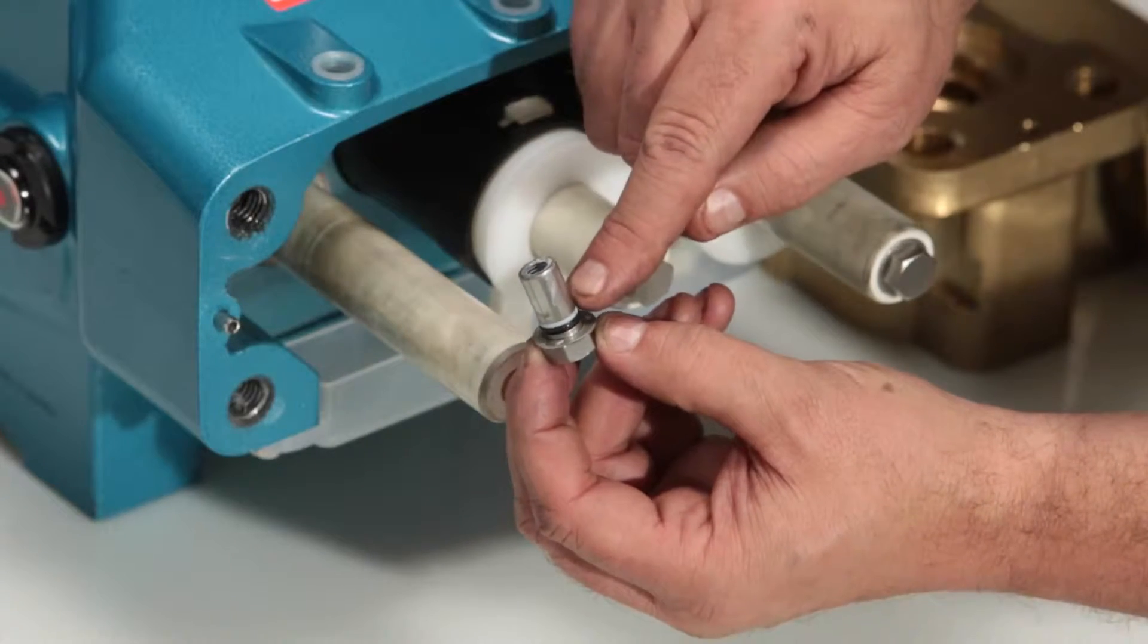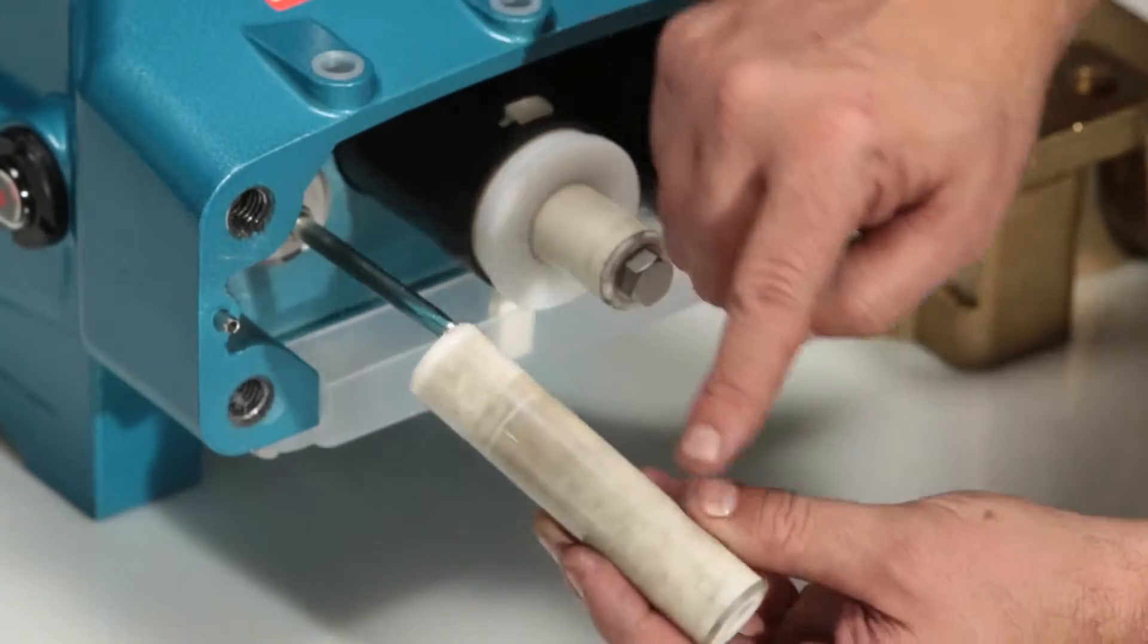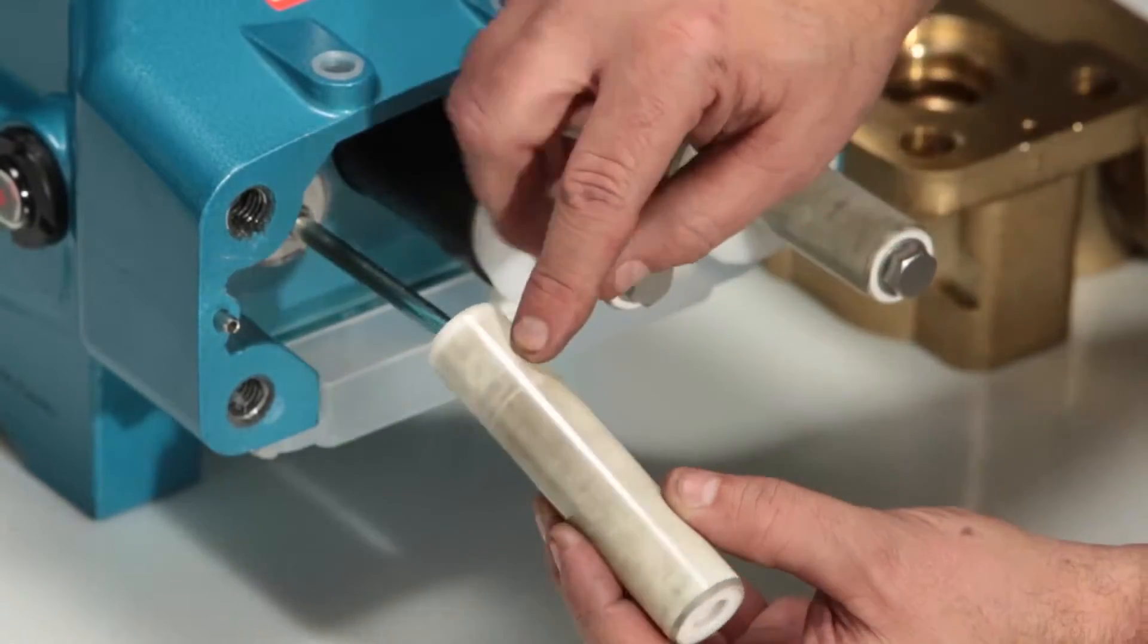Inspect the O-ring and backup ring for damage. Remove the plunger and inspect for cracks or abrasion to the surface.